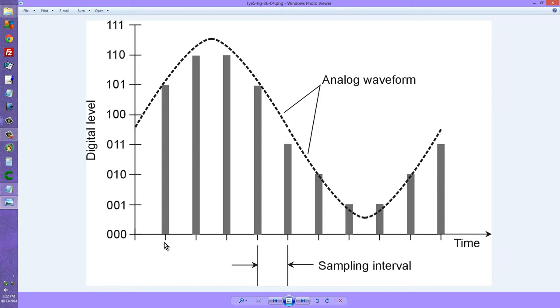But we have to make sure that we only sample the signal at exactly these points in time and no others. They are all separated by an equal length of time or an equal period called the sampling interval.